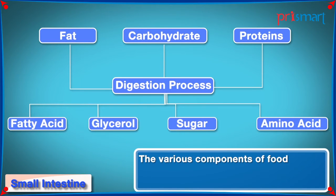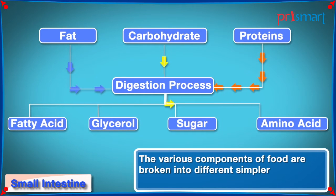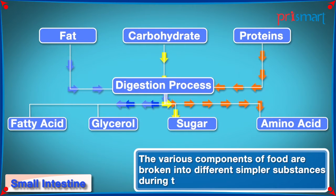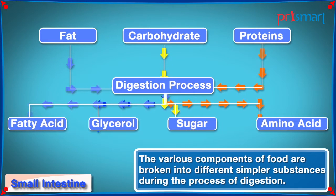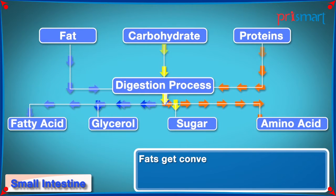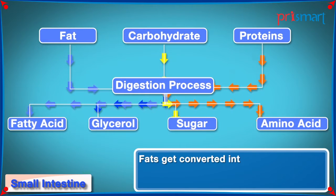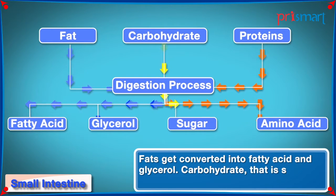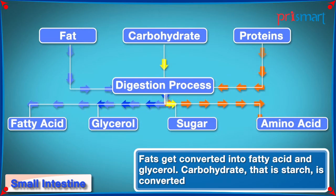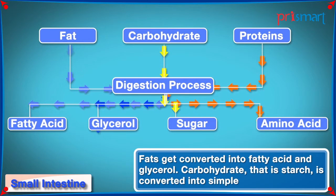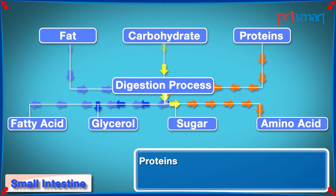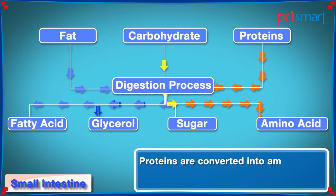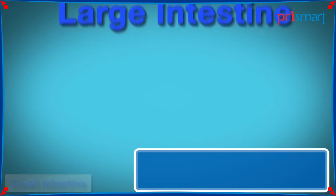The various components of food are broken into different simpler substances during the process of digestion. Fats get converted into fatty acids and glycerol. Carbohydrates — that is, starch — are converted into simple sugars. Proteins are converted into amino acids.